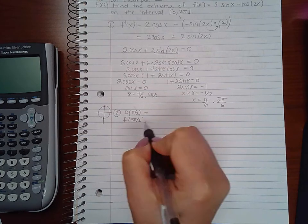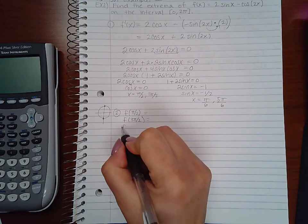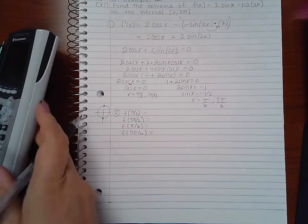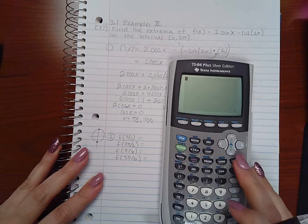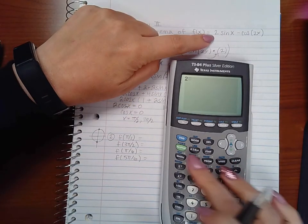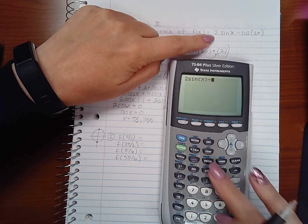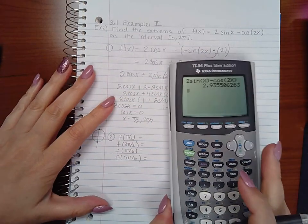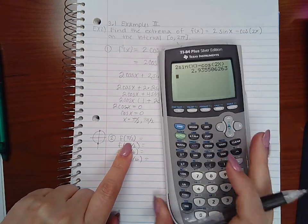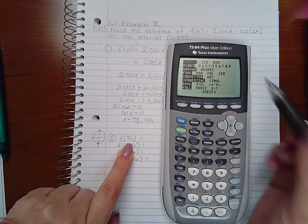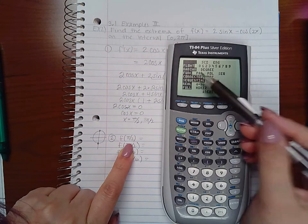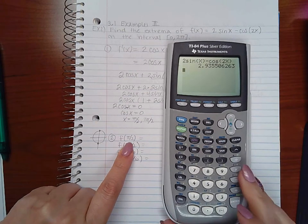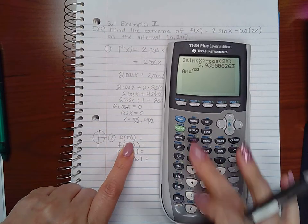So to do that I am going to program my calculator with my original function. Let's go to my calculator and type in 2sin(x) - cos(2x) and hit enter but I'm going to ignore that value because I don't know what was plugged in for x last. Now, these are radians so I'm going to make sure that I'm in radian mode and I am in radian mode.